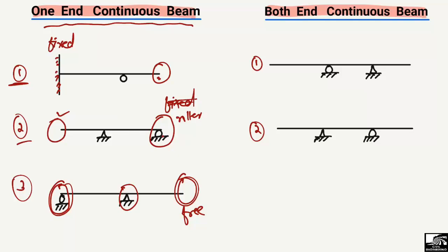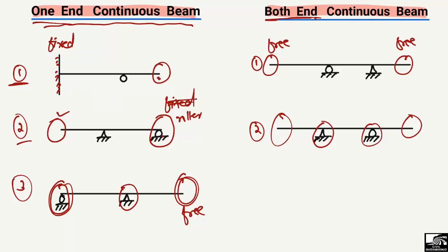Now if we look at the both-end continuous beam, in this case this end and also the other end of the beam — both are free. There are no supports provided at these two ends of the beam. Similarly, in another example where two different supports are provided in the middle, this part of the beam and also this part of the beam is free — they are the overhanging portions of the beam. There is no support provided for these parts, so both ends are free. That's why we call such a beam the both-end continuous beam, where both ends are free in both directions.